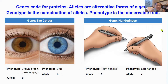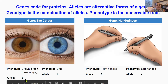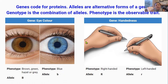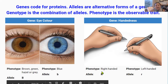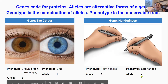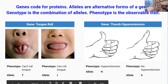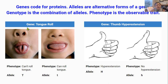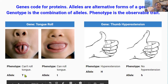Let's go through some examples of genes and alleles. For the gene for eye color: the brown eye allele is dominant and gets capital B, and the blue eye allele is recessive and gets lowercase b. For the gene for handedness: right-hand dominance is dominant so it gets capital R, and left-hand dominance is recessive so it gets lowercase r. For the gene for tongue rolling: not being able to roll your tongue is dominant so it gets capital T, and being able to roll your tongue is recessive so it gets lowercase t.